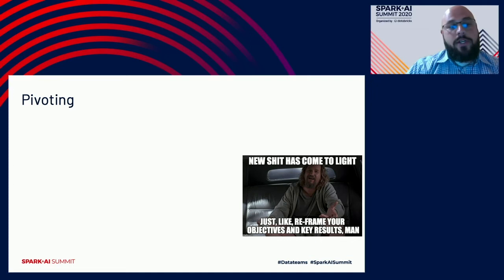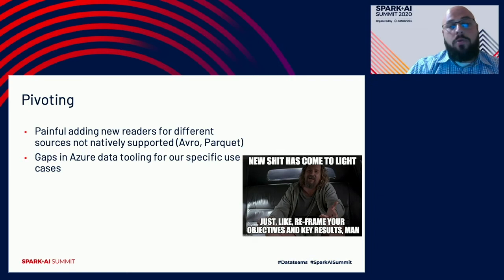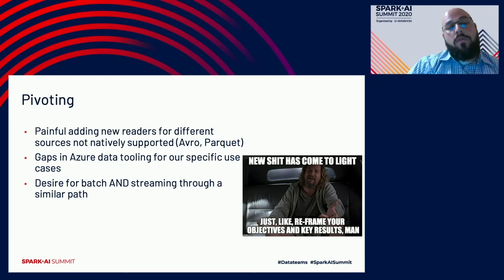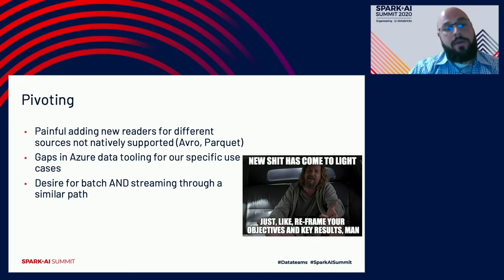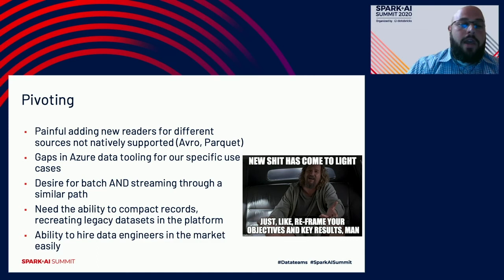It didn't take much time for us to find some flaws in our approach, which led to some pivots in our architecture. We found it painful to add new readers for different sources not supported, such as Avro and Parquet. There were gaps in the Azure data tooling for our specific use cases. We realized that support for batch-only processing was insufficient and wanted a single path for both batch processing and streaming. We needed a compacted version of records to recreate data sets from legacy products, and we needed more standardized tools so we could hire data engineers more easily.